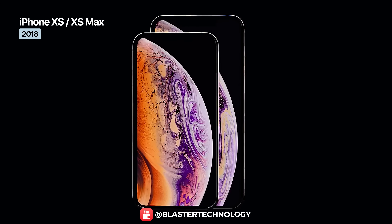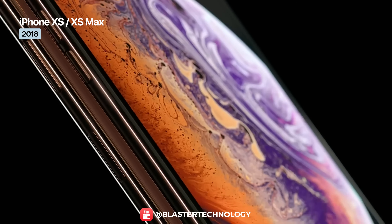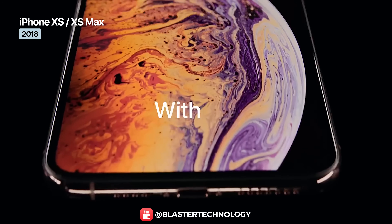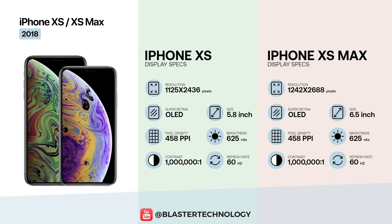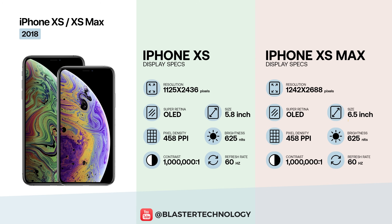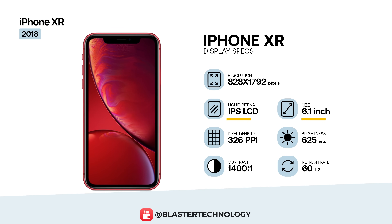The iPhone XS and XS Max use the same Super Retina OLED technology introduced with the iPhone X, with the Max model offering a larger diagonal and a higher resolution. The iPhone XR uses a 6.1-inch Liquid Retina IPS LCD with a resolution of 828 x 1792 pixels and a density of 326 ppi.